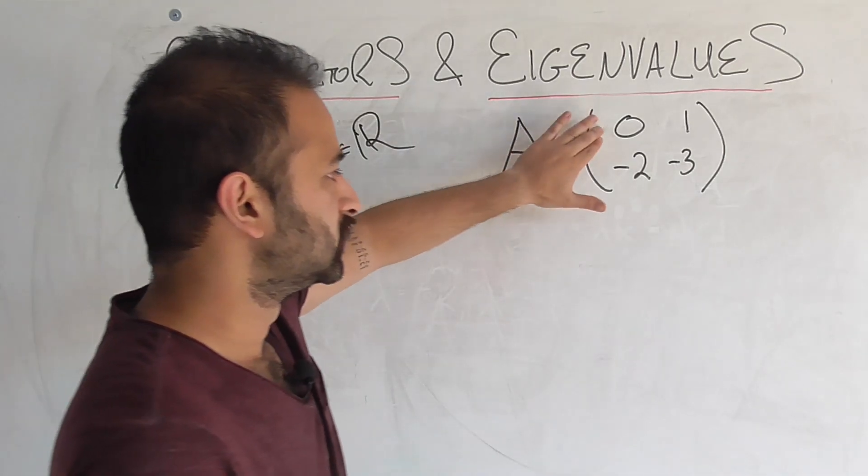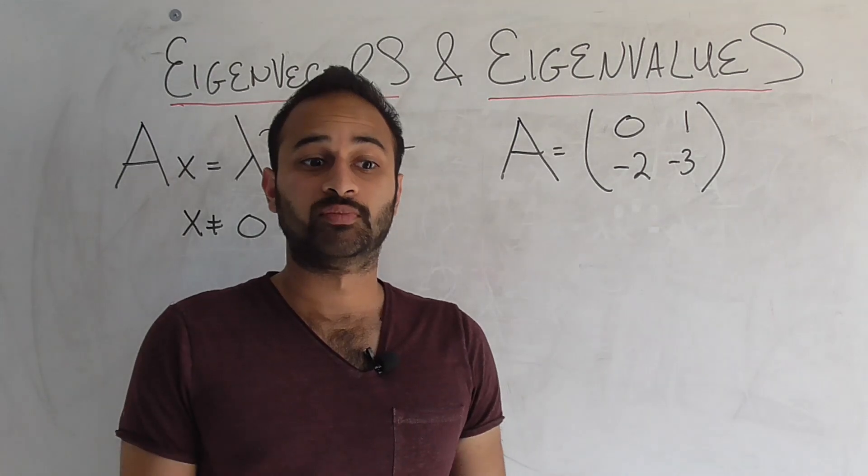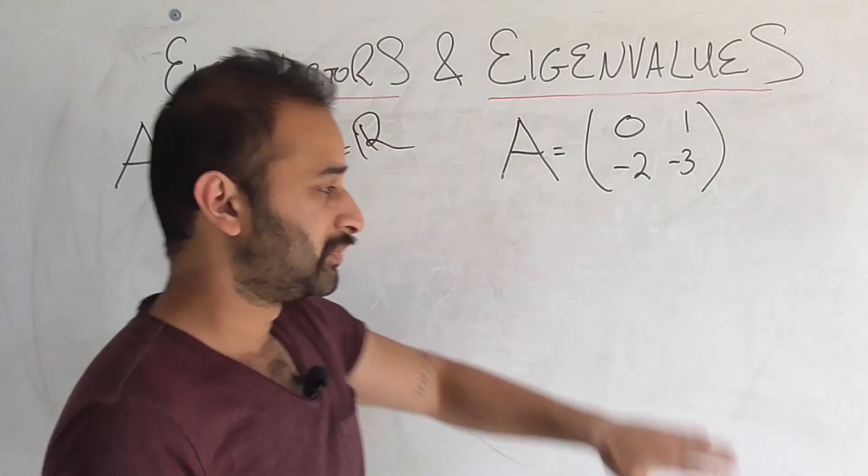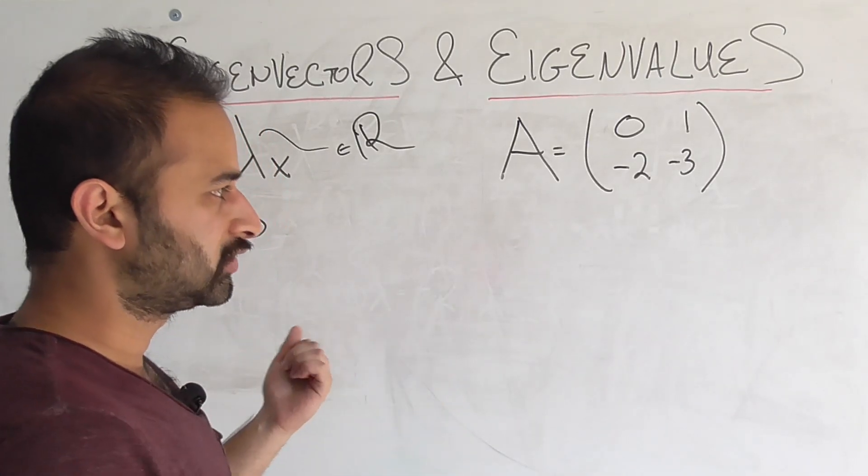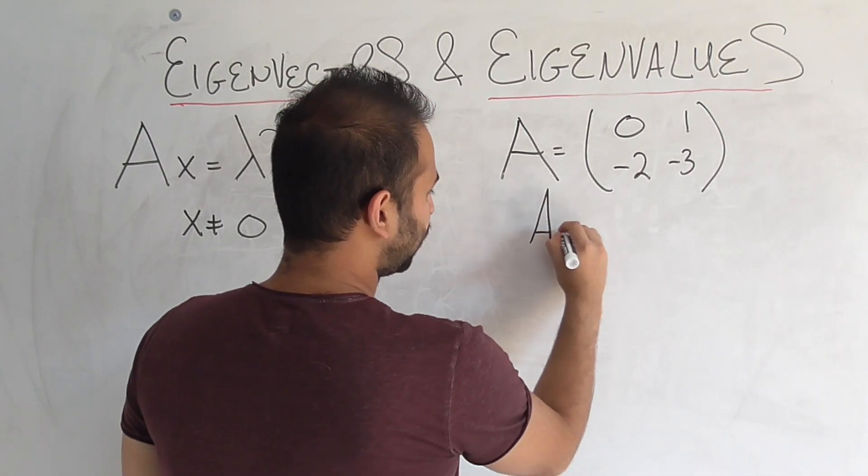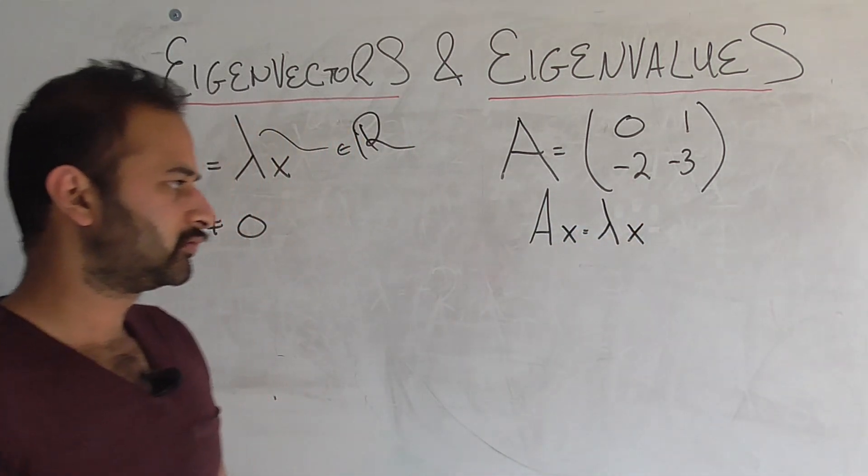Here's our square matrix A: 0, 1, minus 2, minus 3. Our challenge is going to be, let's figure out what are the eigenvalues and eigenvectors of this matrix. Okay, let's start with the definition, because that's all we really have right now. So we know that if we find an eigenvector x, it's going to need to satisfy that equation from the definition.